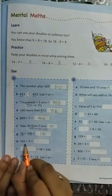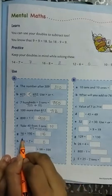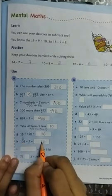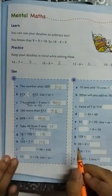Question H, 103 plus 7. 3 plus 7 is 10. 1 plus 0 is 1, and 1. 103 plus 7 is 110.